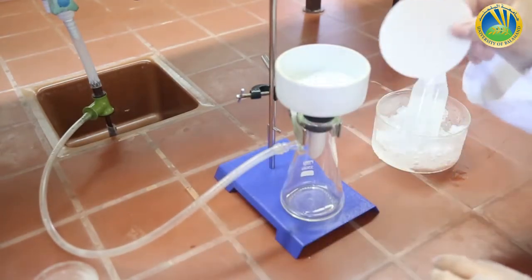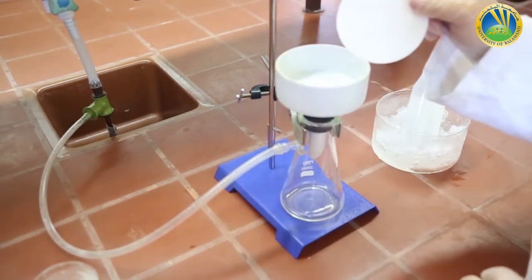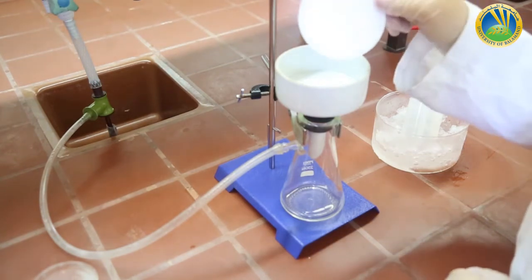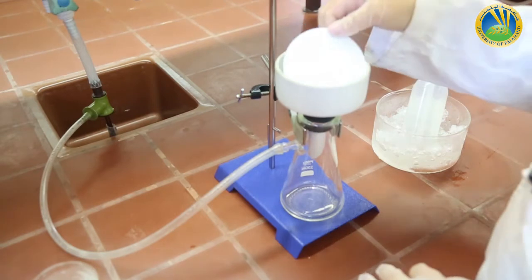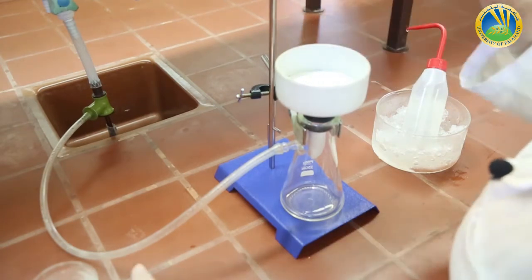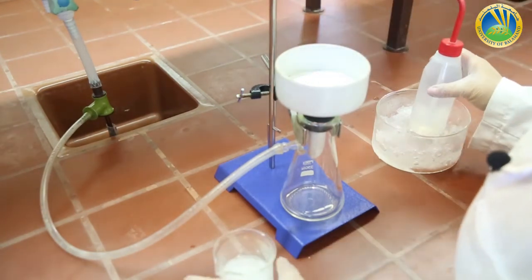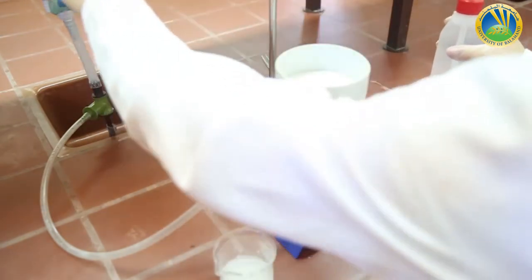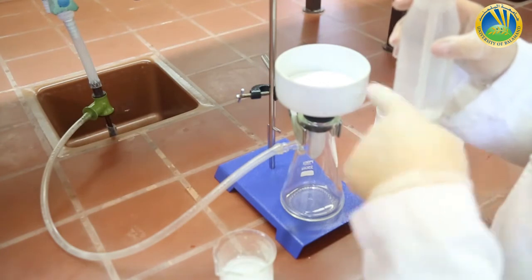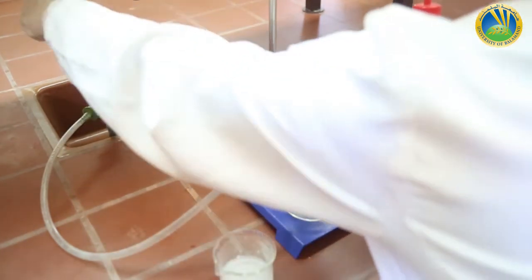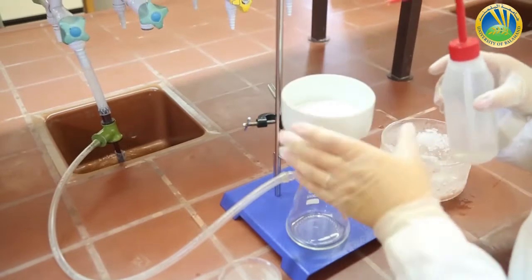Then I have to put a filter paper that I have weighed before, having the weight of 0.538 grams. I have to let it stick with a little bit of my solvent which is cold water. But first I have to turn the water on to have the vacuum inside.